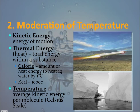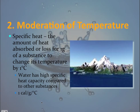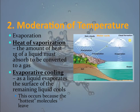The second emergent property of water is its ability to moderate temperature. We look at two energy forms: kinetic versus thermal energy, with thermal referring to heat — specifically the amount of heat energy able to raise 1 gram of substance by 1 degree Celsius. Temperature refers to the average kinetic energy per molecule. One reason water moderates temperature so successfully is its high specific heat capacity compared to other substances, which is the amount of heat absorbed or lost per gram to change temperature by 1 degree Celsius.